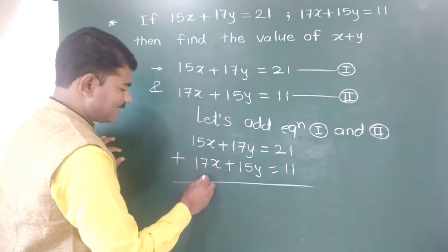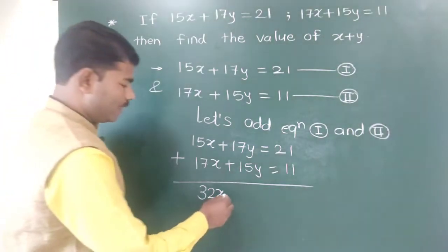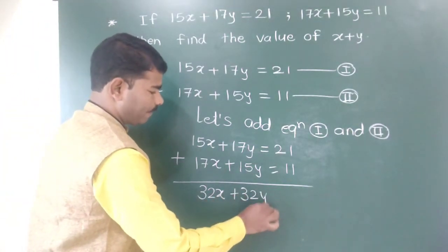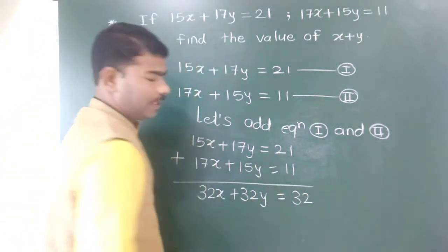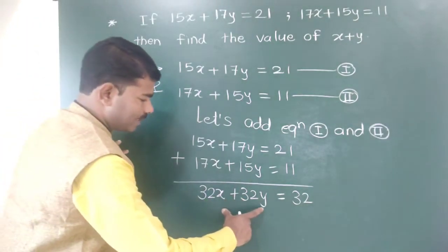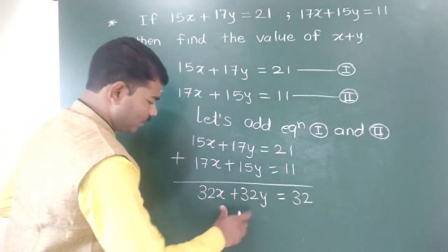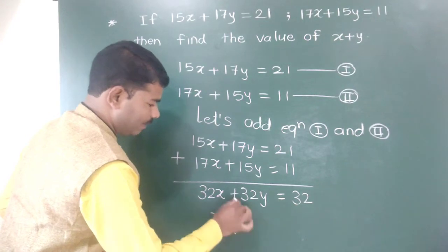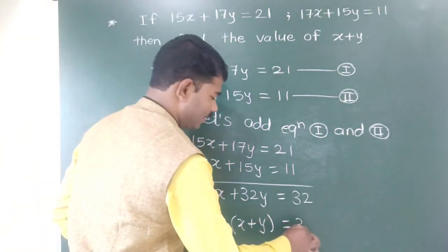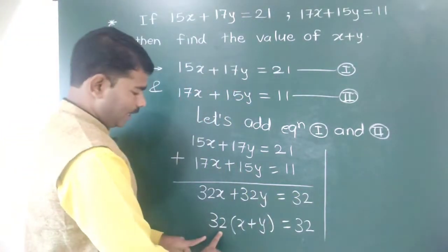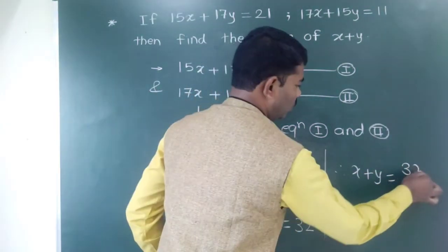Adding both equations: 32x plus 32y is equal to 32. Taking 32 as common, x plus y is equal to 32 divided by 32, so x plus y is equal to 1.